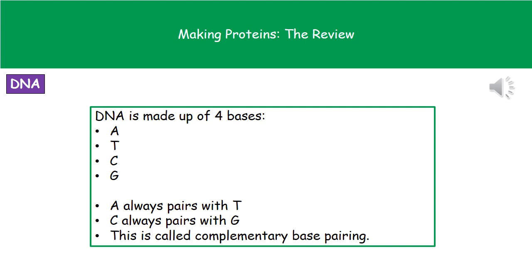If you remember, they've got this complementary base pairing that means A always pairs with T — the two pointy ones go together — and C always pairs with G, the two rounded letters always go together.